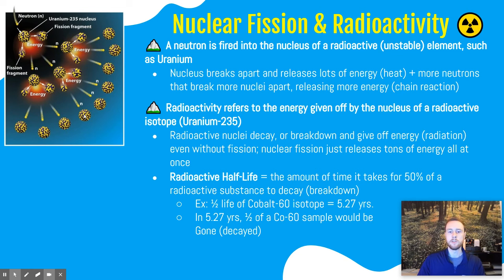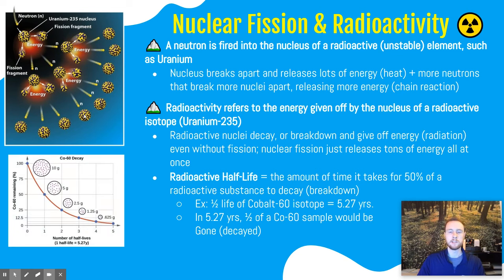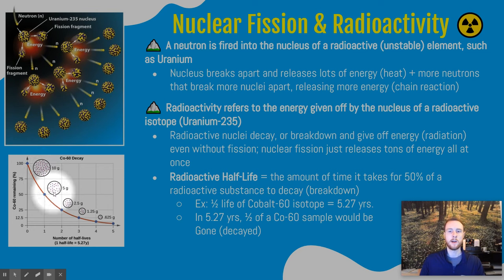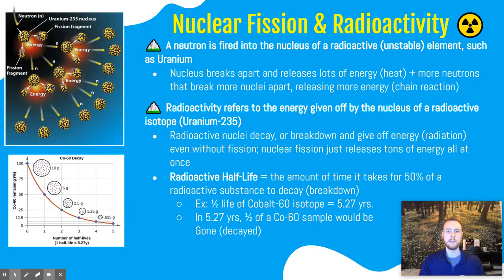Looking at this graph, we can visualize this with cobalt-60. If we start with a 10-gram sample at a given point in time, after one half-life there will be 5 grams remaining. The half-life for cobalt-60 is 5.27 years, so after 5.27 years this 10-gram sample has decayed to a 5-gram sample. In another 5.27 years, it will decay further to a 2.5-gram sample. Using the half-life, we can calculate at any given point in time how much of a radioactive isotope is left.